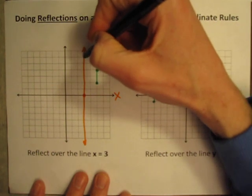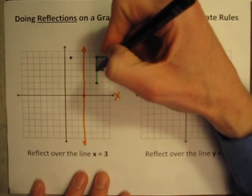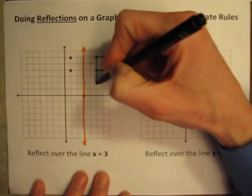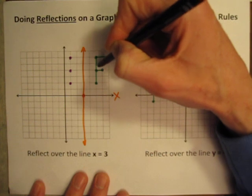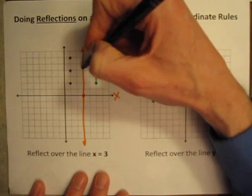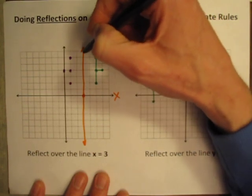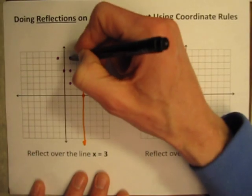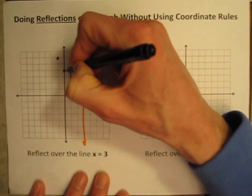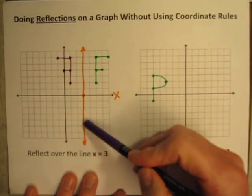When I reflect, I'll take each point, count how far it is from the line of reflection, and count that same distance to the other side. This point is two to the right, so go two to the left. The next point is two to the right, so two to the left. This one is two to the right, so two to the left. This point is three away on the right side, so three away on the left side. And one point is four to the right, so four to the left. Connect the points with lines — looking good. There's my letter F reflected over the line x equals three.